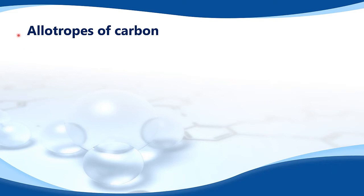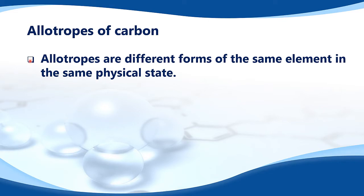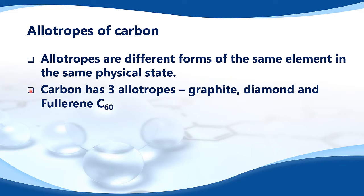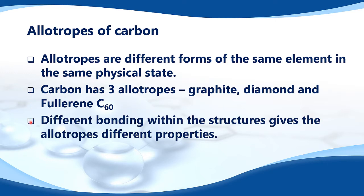In this video we look at the allotropes of carbon. Allotropes are different forms of the same element in the same physical state. Carbon has three allotropes: graphite, diamond, and fullerene C60. Different bonding within the structures gives the allotropes different properties.